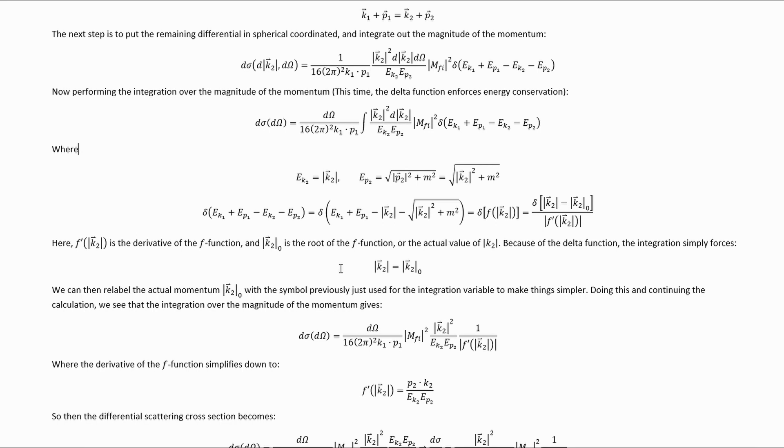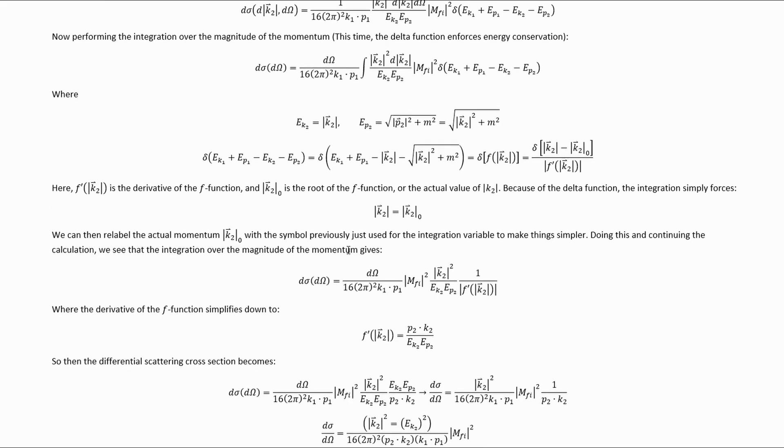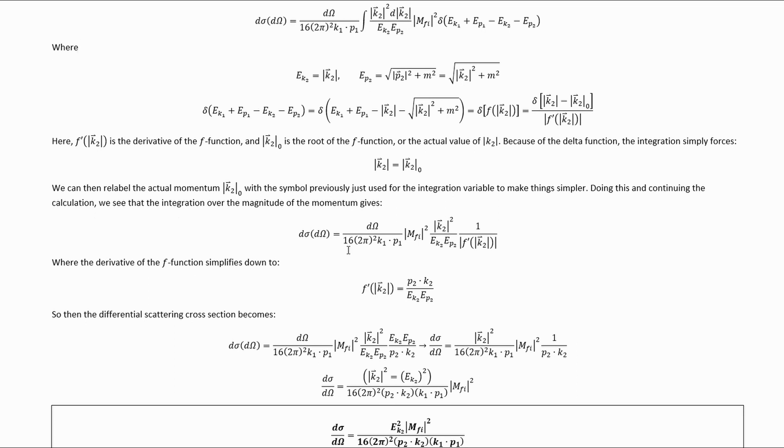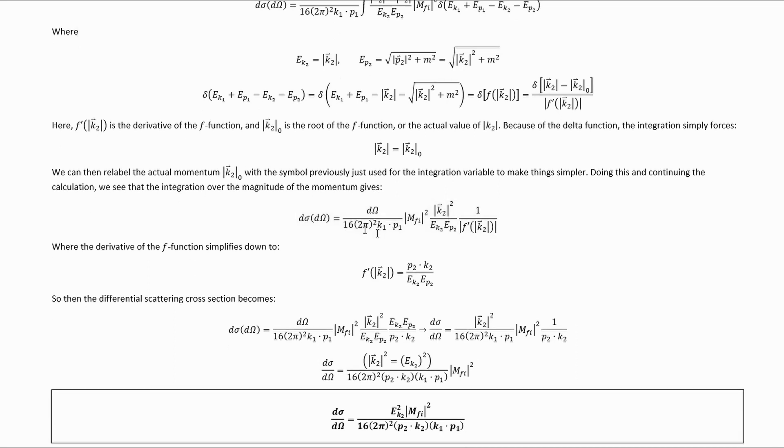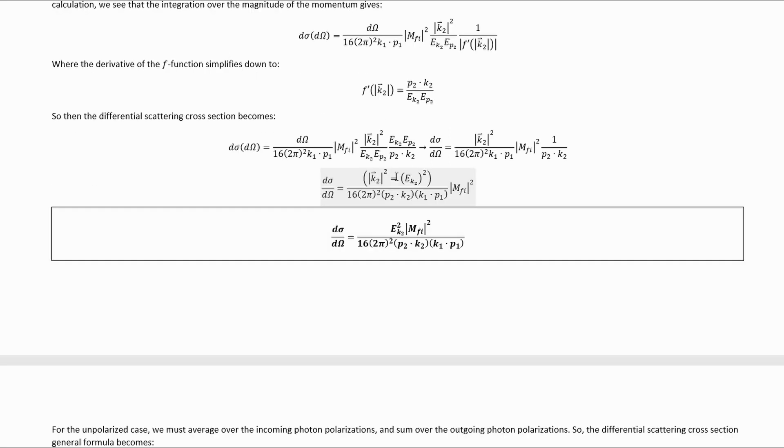From there, the integration just sets the integration variable throughout the integrand equal to the root of the f function. Since the integration is done, we can relabel that root with the same symbol we just used for the integration variable. Doing all of that, the net effect of that last integration is this formula here, where this f function derivative simplifies down to that. Inserting that and dividing the solid angle differential to the other side ultimately gets us to here.